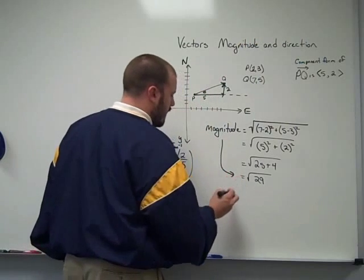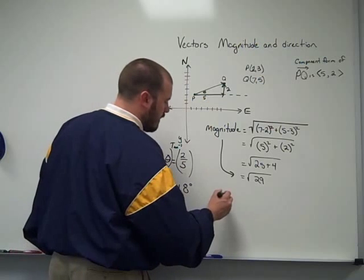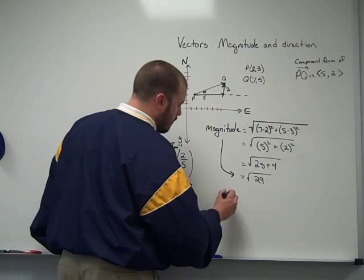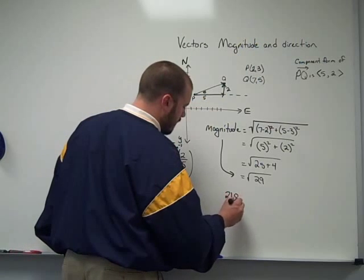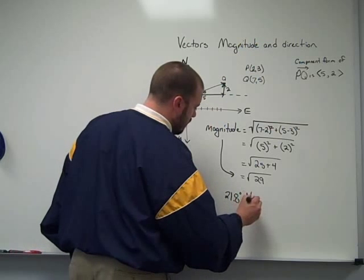So my magnitude is square root of 29, and my direction is 21.8 degrees north.